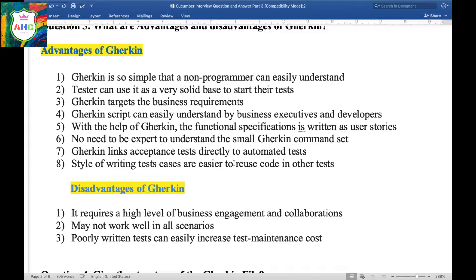Question 3: What are the advantages and disadvantages of Gherkin? These are the eight advantages of using Gherkin. First, Gherkin is so simple that a non-programmer can easily understand it, because it is very similar to English. Second, testers can use it as a solid base to start their tests. Third, Gherkin targets business requirements. Fourth, Gherkin scripts can be easily understood by business executives and developers who don't have knowledge of languages like Java, PHP, or .NET. Fifth, with Gherkin, functional specifications can be written as user stories. Sixth, no need to be an expert to understand the small Gherkin command set. Seventh, Gherkin links acceptance tests directly to automated tests. Eighth, the style of writing test cases makes it easier to reuse code in other tests.